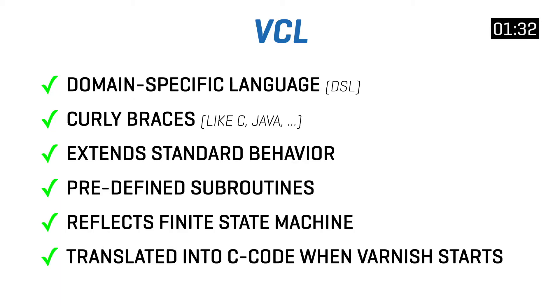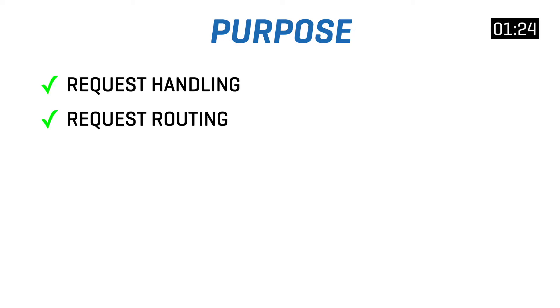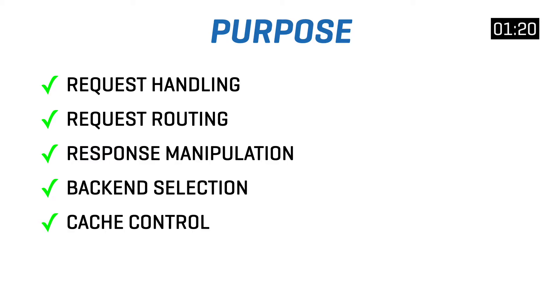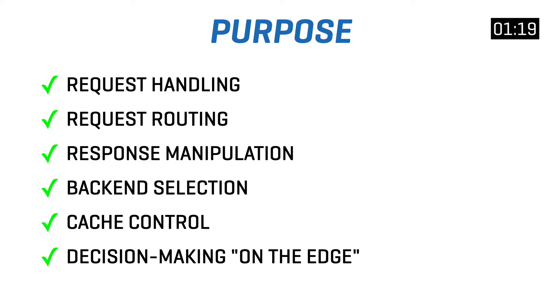The code itself gets translated into C code and eventually compiled to machine code when Varnish starts. The purpose of VCL is request handling, request routing, response manipulation, back-end selection, controlling the cache, decision-making on the edge, and many other features.